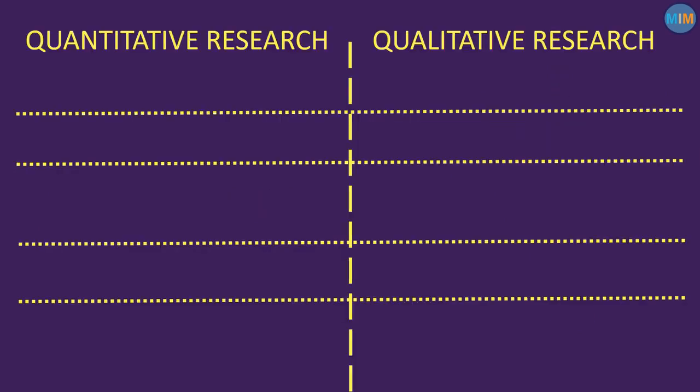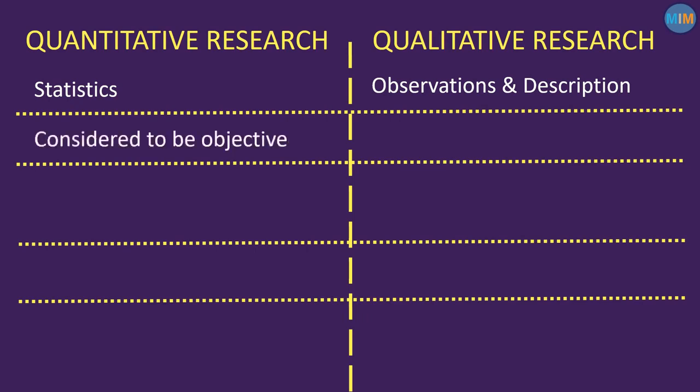Difference between quantitative research and qualitative research. Quantitative research uses statistics. On the other hand, qualitative research uses observations and description. Quantitative research is considered to be objective. On the other hand, qualitative research is considered to be subjective.